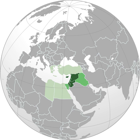In its widest historical sense, the Levant included all of the eastern Mediterranean with its islands — that is, all of the countries along the eastern Mediterranean shores, extending from Greece to Cyrenaica. The term entered English in the late 15th century from French.